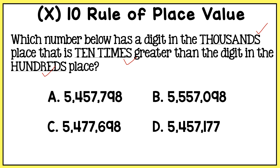In choice A, the thousands place is a seven and the hundreds place is a seven, so the times 10 rule does apply — I have two digits that are the same and next to each other. In choice B, the thousands place has a seven but the hundreds place has a zero — that's not the same digit, so this will not work.